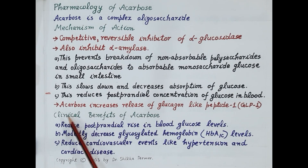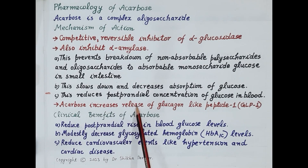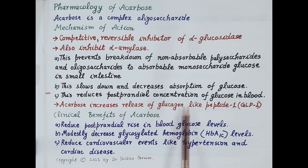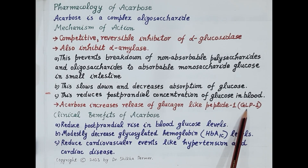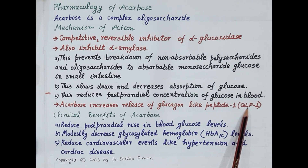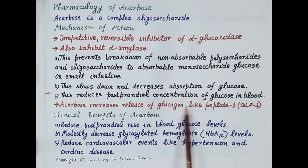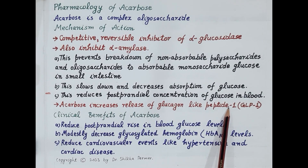In addition, acarbose also increases release of glucagon-like peptide 1 (GLP-1) from the intestine. GLP-1 inhibits release of glucagon from the pancreas, which prevents breakdown of liver glycogen to glucose. This action of acarbose also helps prevent a rise in blood glucose levels.